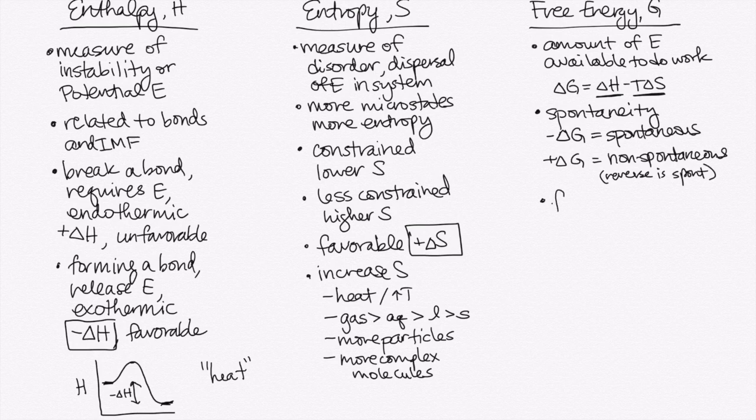For delta G, it's favorable to have a negative delta H, an exothermic reaction, and then a positive delta S, where you have more microstates at the end than you do at the beginning. And in this case, if delta H is negative and delta S is positive, no matter the temperature, it will be spontaneous.